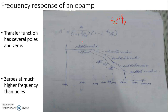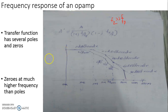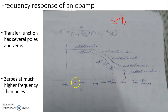Suppose there are n number of poles at n different frequencies, then at each and every pole frequency the gain will be falling at a rate of 20 dB per decade. On the basis of this, we have approximated a frequency response curve representing both the variation of the magnitude of the gain as well as the phase angle of the gain as a function of frequency. As the frequency of the input signal increases, initially the gain is found to be constant, meaning the roll-off of the gain is zero dB per decade.